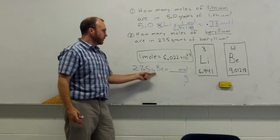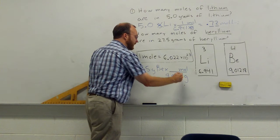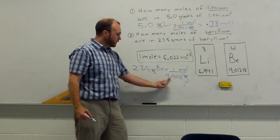Beryllium has a molar mass of 9.01218 grams per mole. So, grams will cancel. We'll get moles. If we divide 27.5 by 9.01218, we'll get our answer.